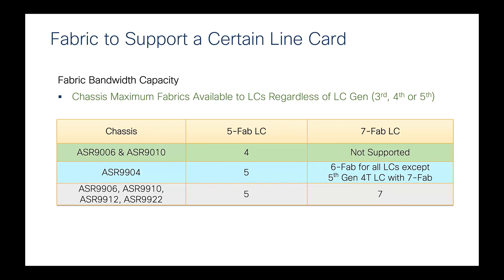A line card inserted into different ASR9000 modular chassis can support a different number of fabrics. For example, a five-fabric line card can only be supported in the ASR9006 and 9010, but in those chassis only four fabric port connections are supported. Depending on the line card forwarding capacity, the ASR9904 can provide five, six, or up to seven fabrics. The ASR9906, 9910, 9912, and 9922 support both five-fabric and seven-fabric line cards.